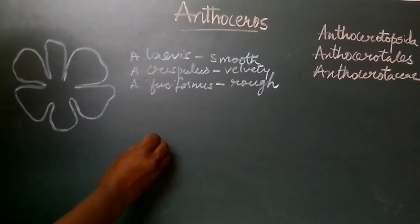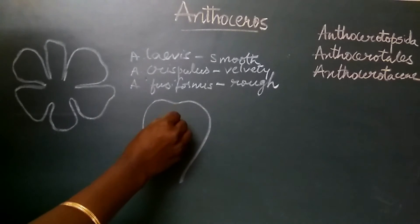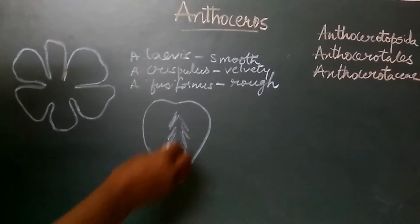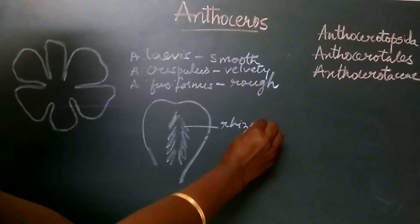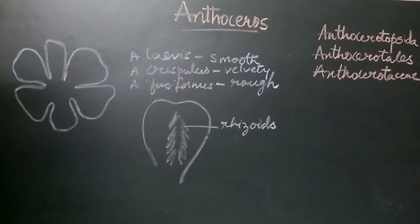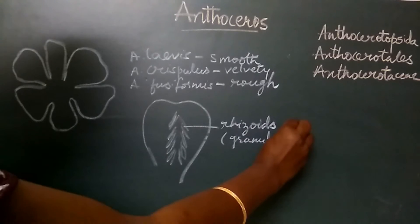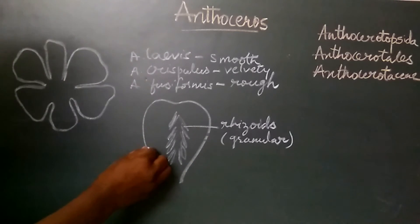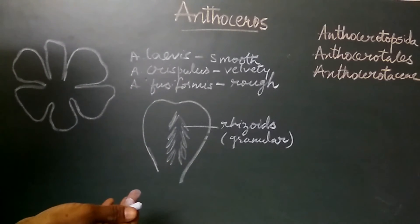When we turn the thallus to the ventral surface, the thallus shows the presence of unicellular, thin-walled or smooth-walled rhizoids along the median line. These rhizoids are filled with granular material. Tuberculated rhizoids and scales are absent. In Anthoceros, both tuberculated scales and rhizoids are absent.